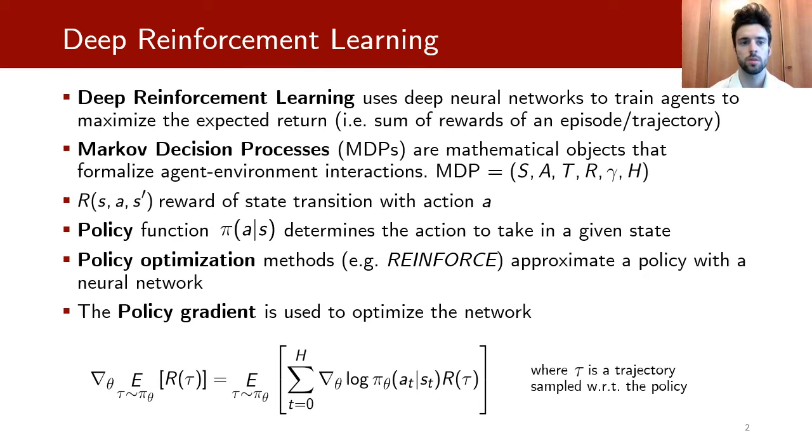First of all, what is deep reinforcement learning? Deep reinforcement learning is a branch of machine learning that uses deep neural networks to solve the reinforcement learning problem. Reinforcement learning is concerned with training agents to act in an environment to maximize the expected return, that is the sum of the rewards collected by the agents in an episode. An episode is defined as a sequence of states and actions. The interaction between agents and the environment is formalized through a Markov decision process, MDP for short.